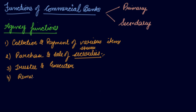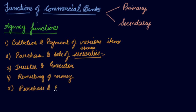The fourth agency function is remitting of money. If you want to send money from your Indian bank account to someone in the USA, the bank helps you remit your money. Related to this is the purchase and sale of foreign exchange — if you need to go to the USA and want to convert your rupees into dollars, you go to the bank and the bank helps you with the foreign exchange conversion.